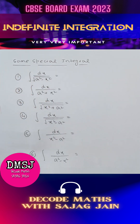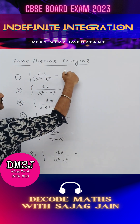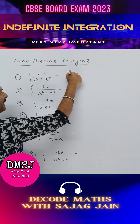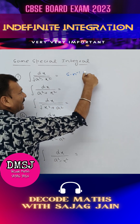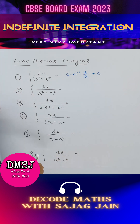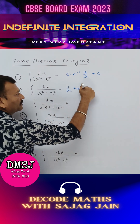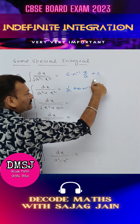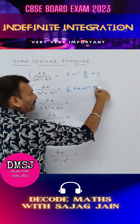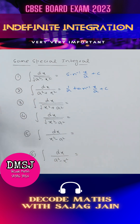Some special integrals: dx upon under root of a square minus x square equals sine inverse of x by a plus c. dx upon a square plus x square equals 1 upon a tan inverse x by a plus c.